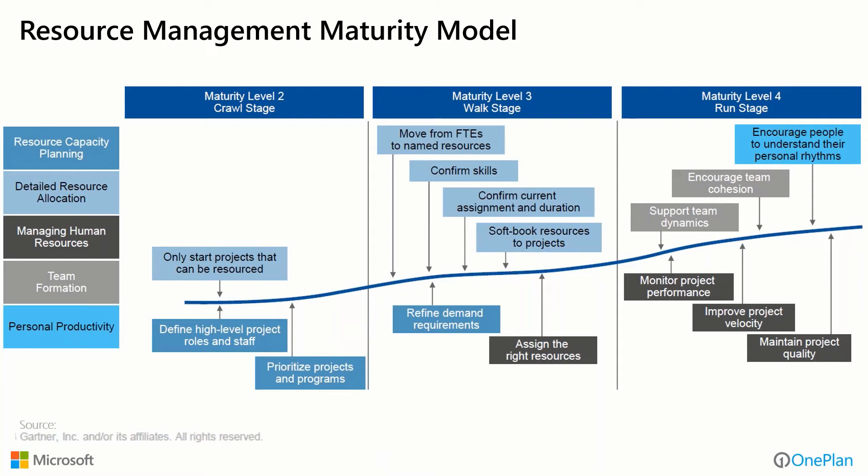At the next level of maturity — the walk stage, level three — we bring in more detailed resource allocation. We refine demand requirements, which may be adjusted once we build a detailed plan, and then we assign those detailed resources to the right things at the right time, factoring in skills and other considerations.